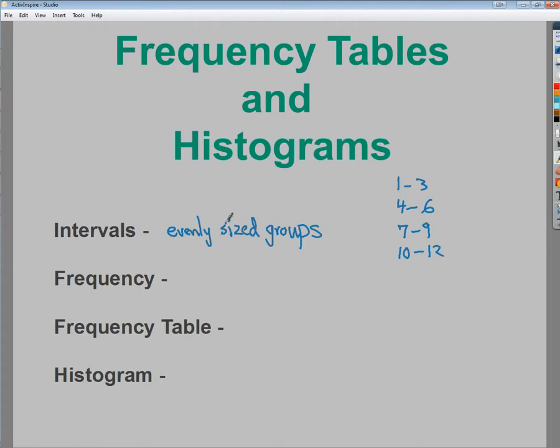Frequency is how often or how many times a number falls into that group. So, the number of data points in each interval. Maybe I have six of them that fall between 1 and 3, I have 5 here, 4 here, and 2 here.